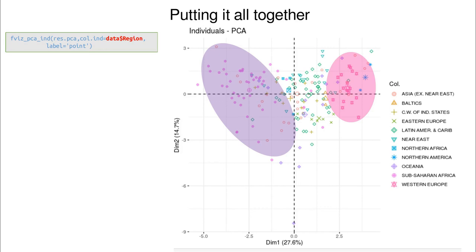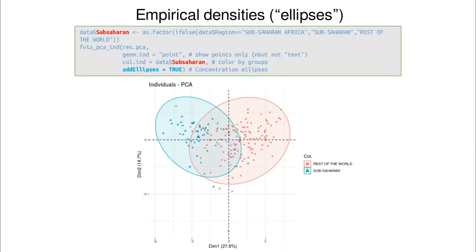This two-dimensional representation is much richer than the original dataset. It's also an invitation for clustering. Using empirical density — not exactly GMM — you can see that you can cluster Sub-Saharan Africa and the rest of the world, though there is some overlapping. Even comparing just one part of the world it's not easy, but this is an invitation to explore the data from different angles.